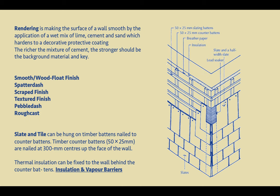Moving to solid wall construction, we start looking at how these walls are finished. For the most part we will be discussing the rendering of a surface using some kind of mixture of lime, cement and sand, and these can be considered in different types of renders. Once again we do not need to know all sorts of details, but we should be able to identify these different types and understand the advantages and disadvantages of using them.